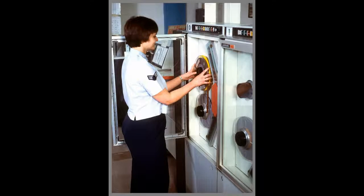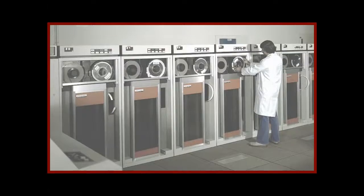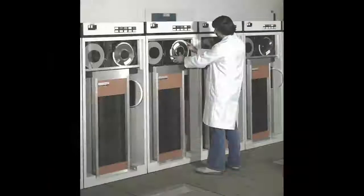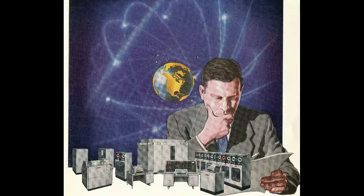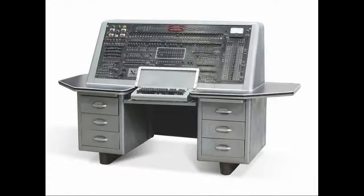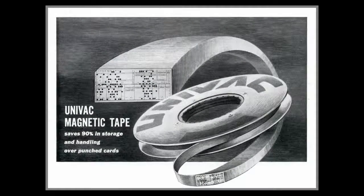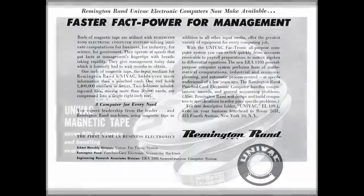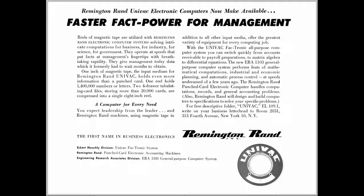Actually, it wasn't until 1951 that magnetic storage tape reels were first used. The first such reels were used on the UNIVAC-1 computer, introduced in 1951. The UNIVAC-1 was developed by the Eckert-Mauchly Computer Company, which later became the UNIVAC Division of Remington Rand.